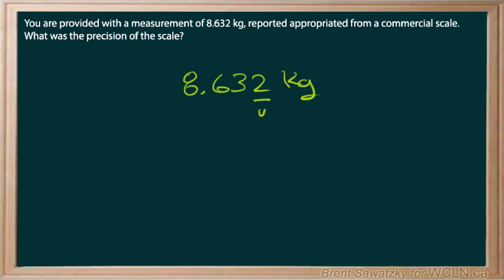First of all, we have one uncertain digit. A proper measurement has one uncertain digit with the rest of them being certain.